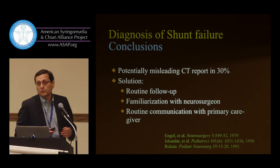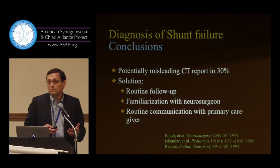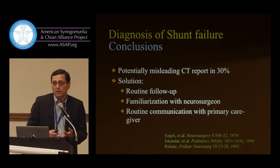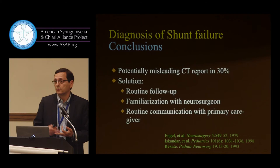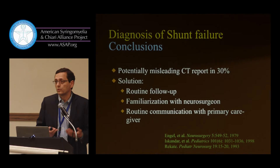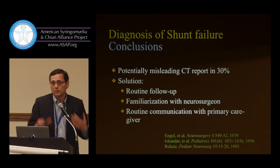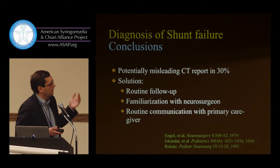Potentially misleading reports in 30% of cases. The solution: families, emergency room physicians, and primary caregivers need to know that when shunts fail, the ventricles don't necessarily dilate. This is new data — how are they going to know this if they don't communicate with neurosurgeons? They won't keep up with that kind of literature. This can be emphasized at routine follow-up clinics, with ample discussion with the neurosurgery team and routine communication and primary caregiver education.